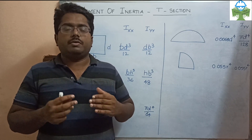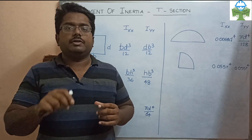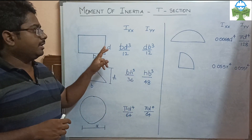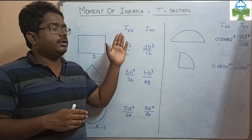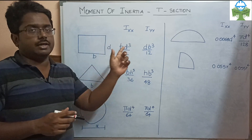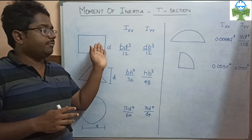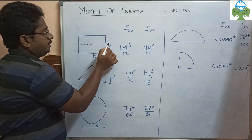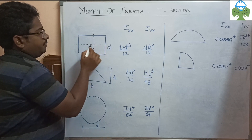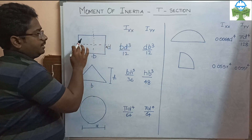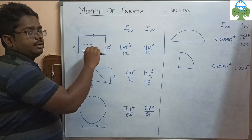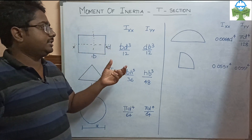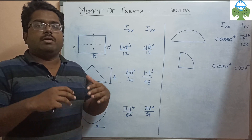What is the moment of inertia of the object with respect to its centroid? For example, if it is a rectangle, bd³ by 12 is the moment of inertia with respect to the horizontal XX axis. In the formula, this is the centroid. With respect to the XX axis, Ixx is the moment of inertia — this is a centroid axis. The resistance is bd³ by 12.